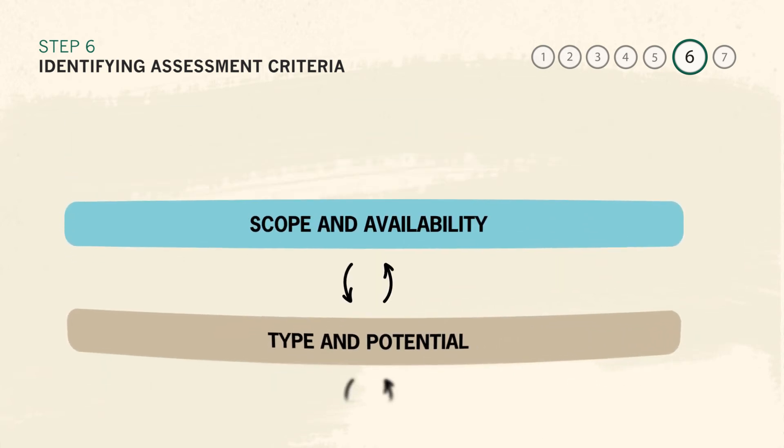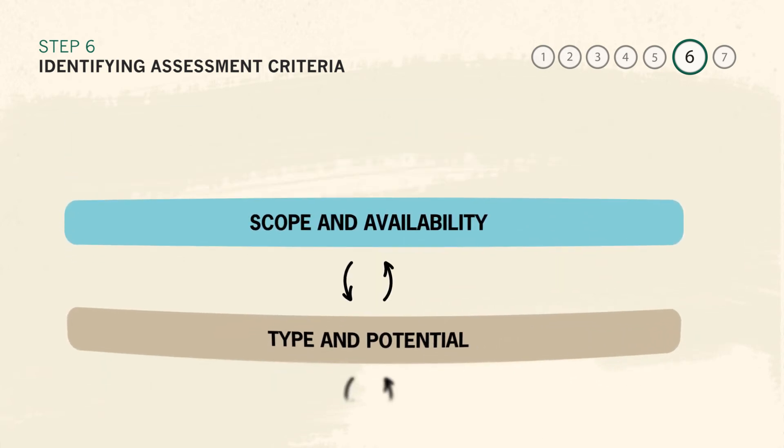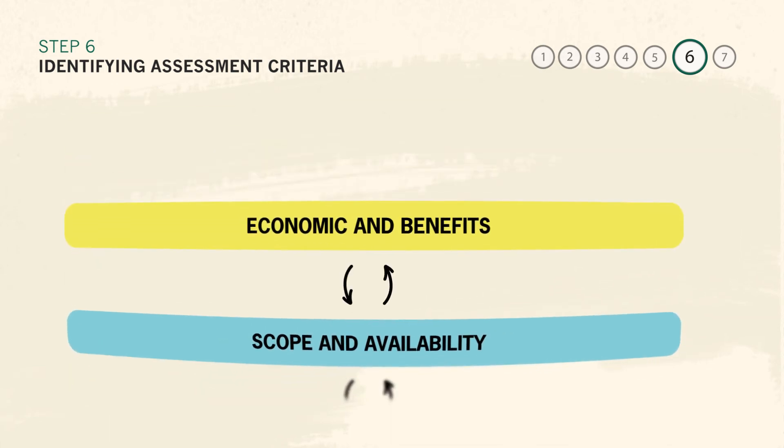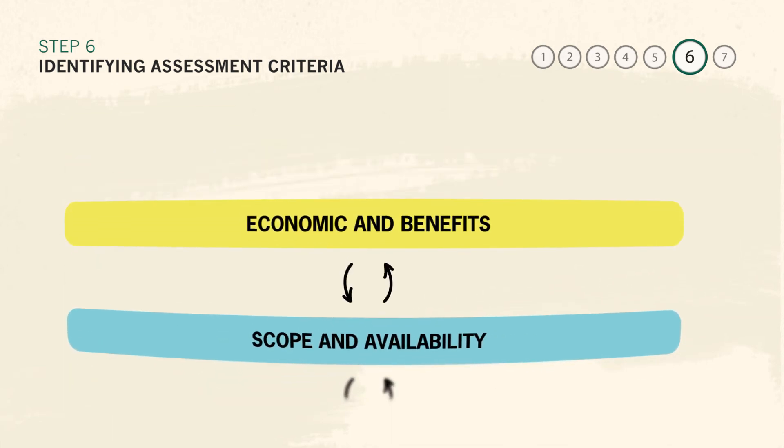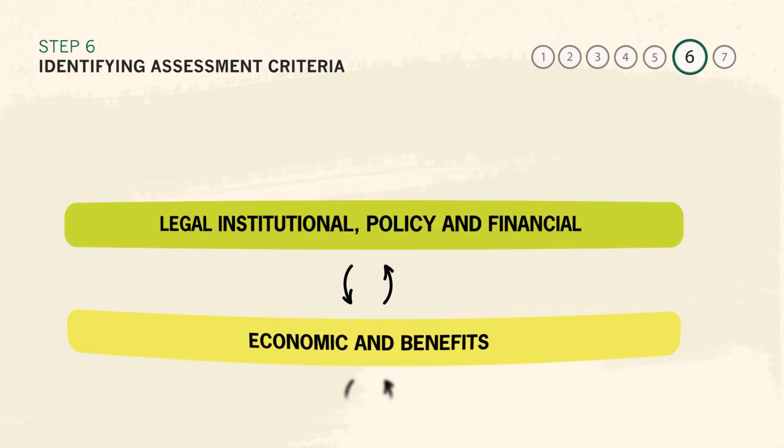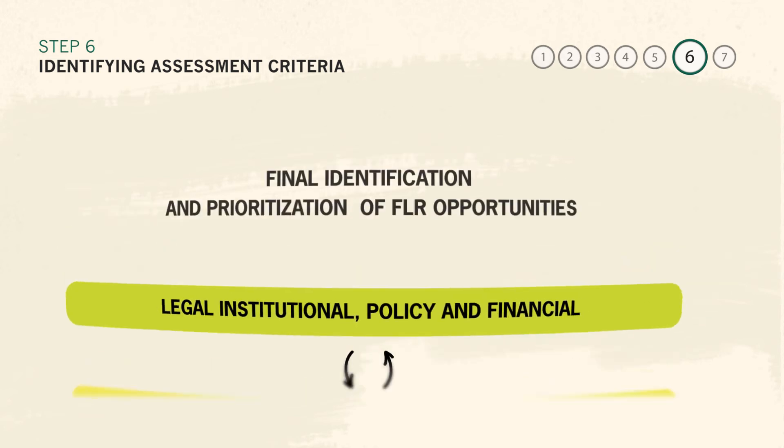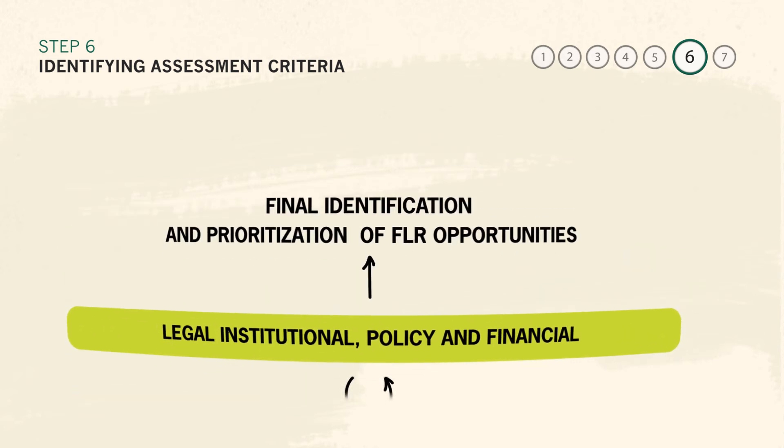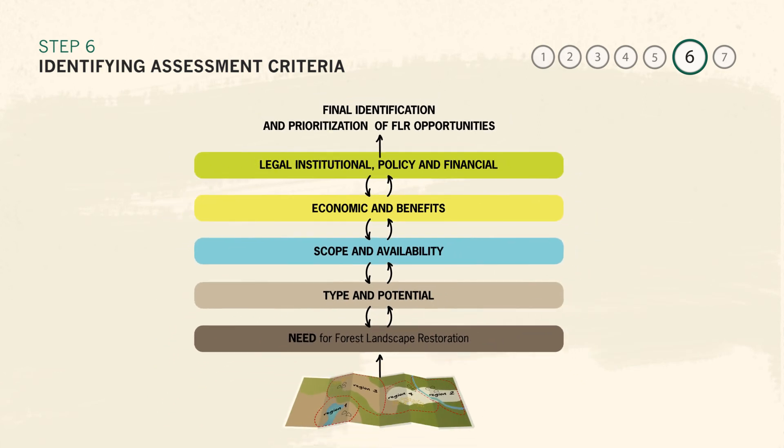Is this land available for restoration or is it being used in some other way? What are the costs and benefits of restoring that land using a particular intervention? Are there any legal or political implications for restoring this land? Actual criteria for identifying restoration potential will be determined by stakeholders during this phase of ROAM.